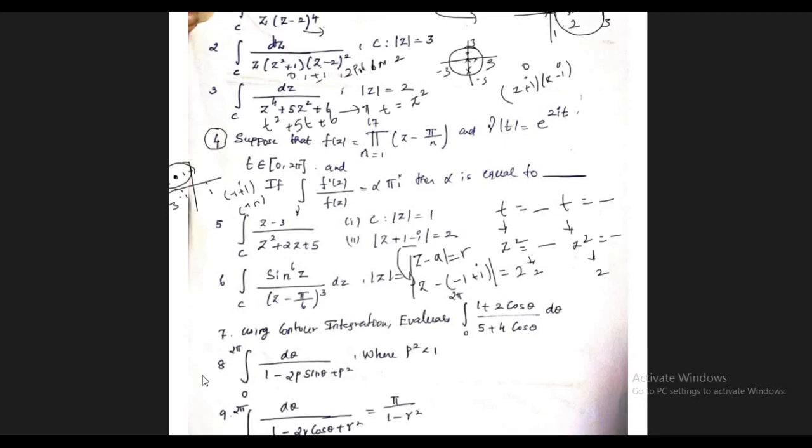The 4th problem: f(z) = product of n=1 to 17 of (z − π/n), and γ(t) = e^(2it), where t belongs to [0, 2π]. Given that the integral over γ of f'(z)/f(z) = α·πi, find α. Note there is a product symbol here — you have to multiply all 17 terms. Many students only took f(z) = z − π/n, but you should not do that.